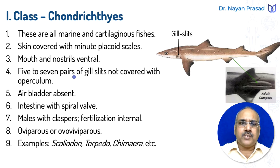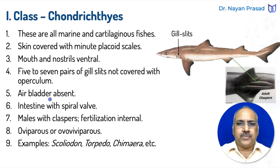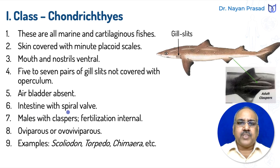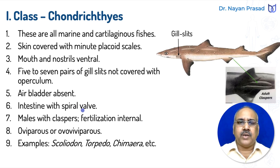In cartilaginous fishes, air bladder is absent. Air bladder is also called swim bladder — it is an air-filled, balloon-like structure present inside the body of bony fishes; it is not present in cartilaginous fishes. In these fishes, the intestine bears a spiral valve. The spiral valve is a spirally coiled infolding of the inner wall of the intestine, increasing the surface area for digestion and absorption of food.